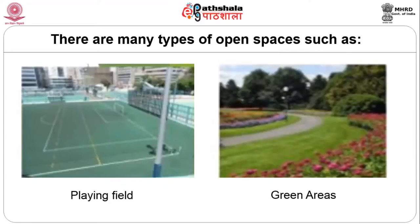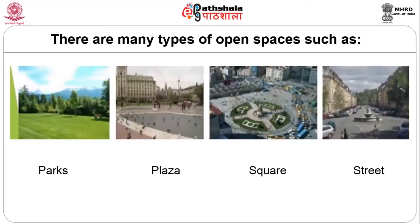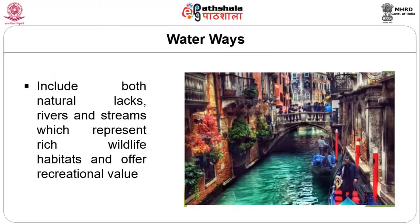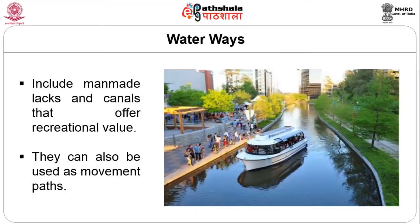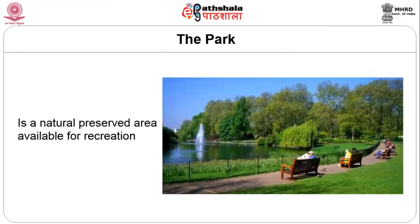Green areas add aesthetics to walkways and other things. Parks, plazas, squares, streets — different types of streets, different types of squares, open plazas, and waterways all add beauty to urban spaces. Waterways double up as navigation and transportation. In this kind of environment, you can also sit and leisurely read, write a book, or do angling — all this activity is possible.